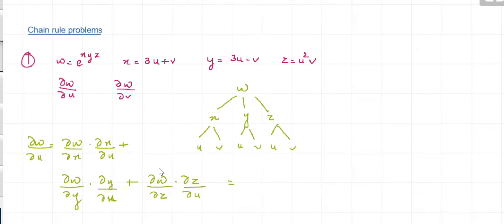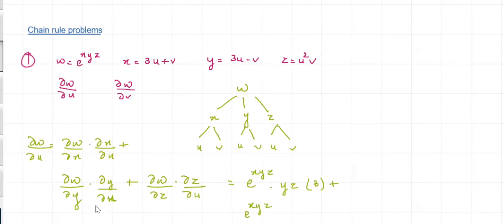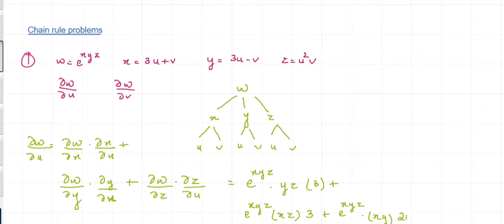So this is equal to: ∂w/∂x is e raised to xyz times ∂x/∂u which is 3, plus e raised to xyz times xz times ∂y/∂u, plus e raised to xyz times xy times ∂z/∂u, where ∂z/∂u is 2u.